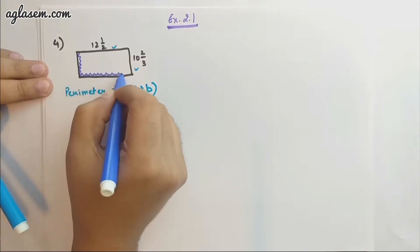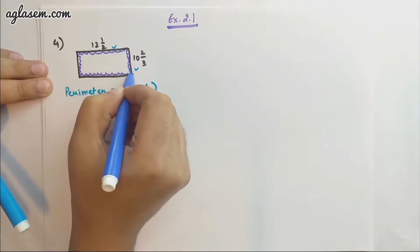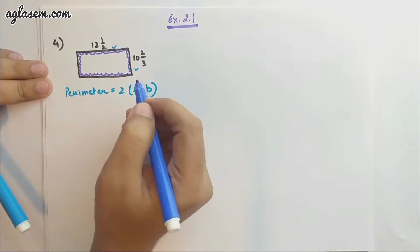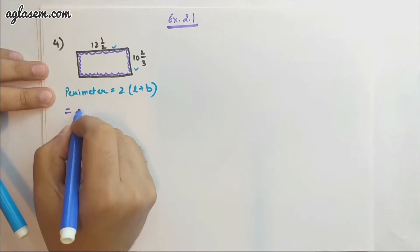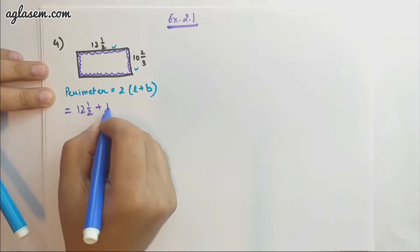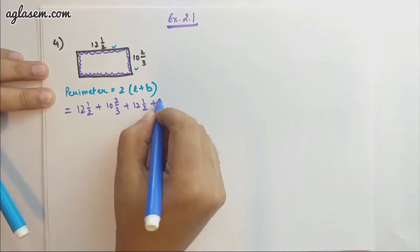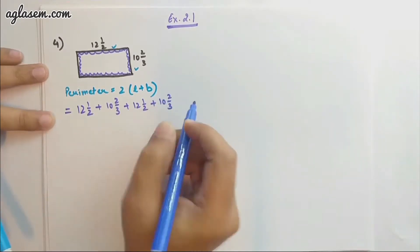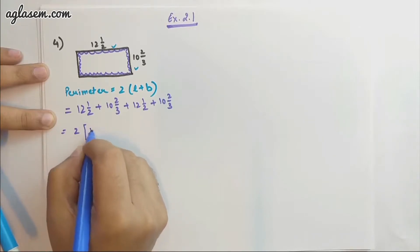What we need to do is add 12 1/2 + 10 2/3 + 12 1/2 + 10 2/3. This is basically the same thing, that is twice of (12 1/2 + 10 2/3).